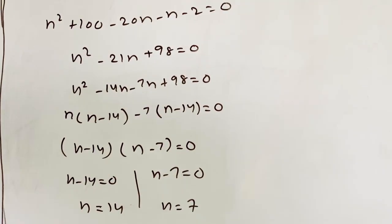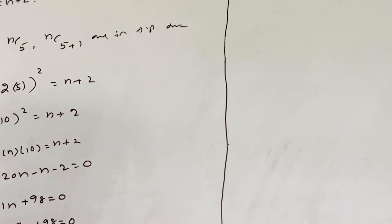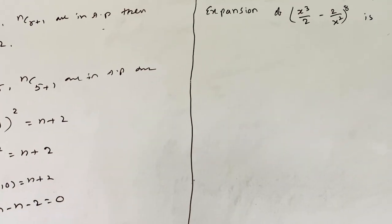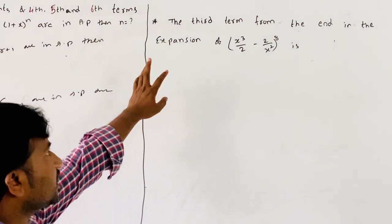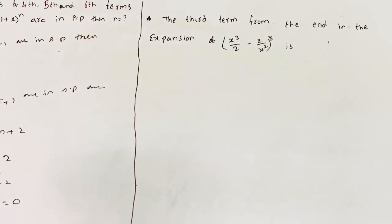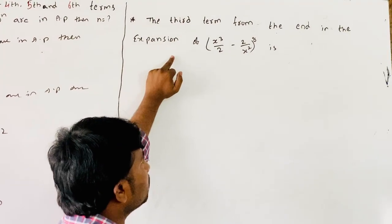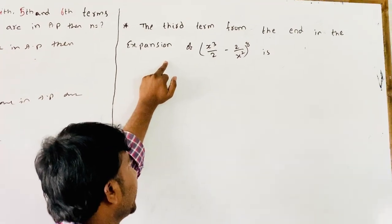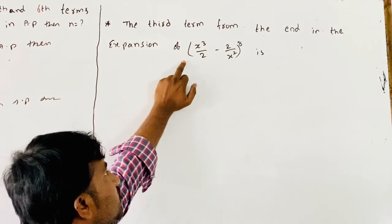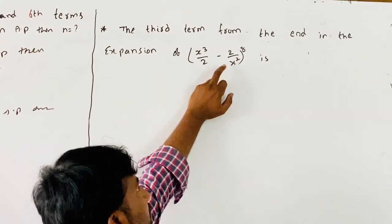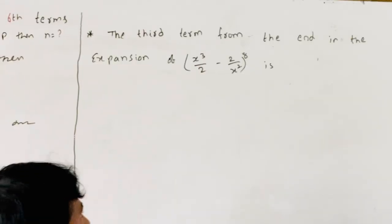Therefore, n = 7 or n = 14. Now the next example: find the third term from the end in the expansion of (x²/2 - 2/x²)^8.